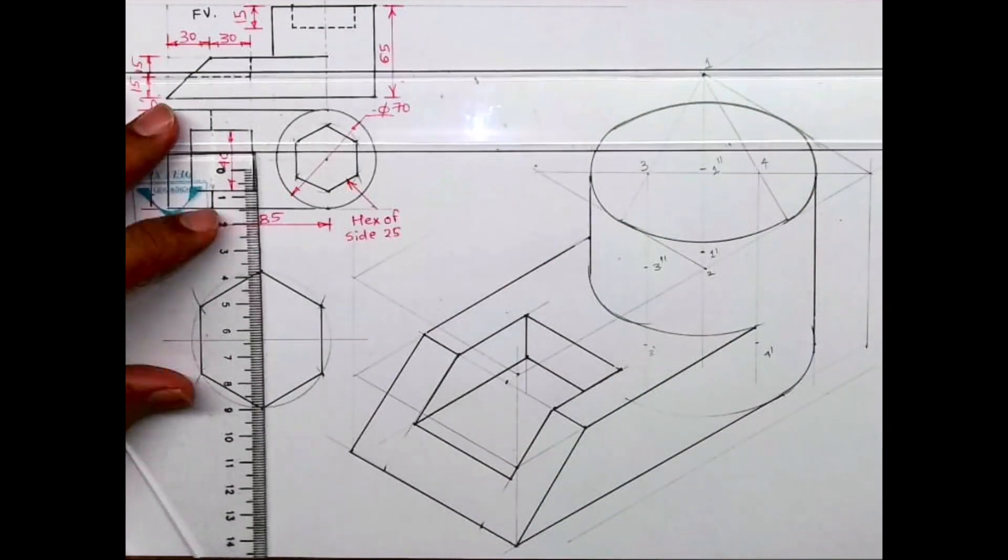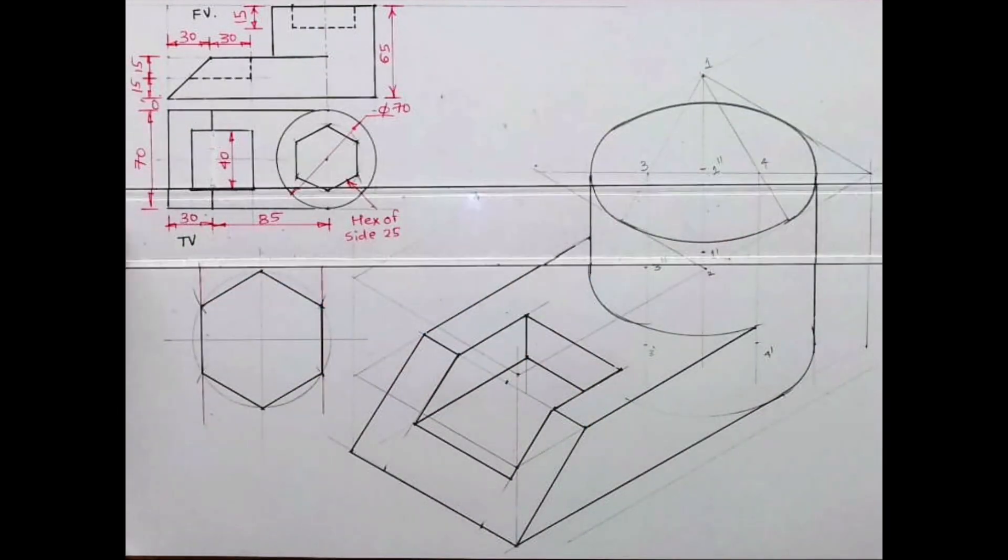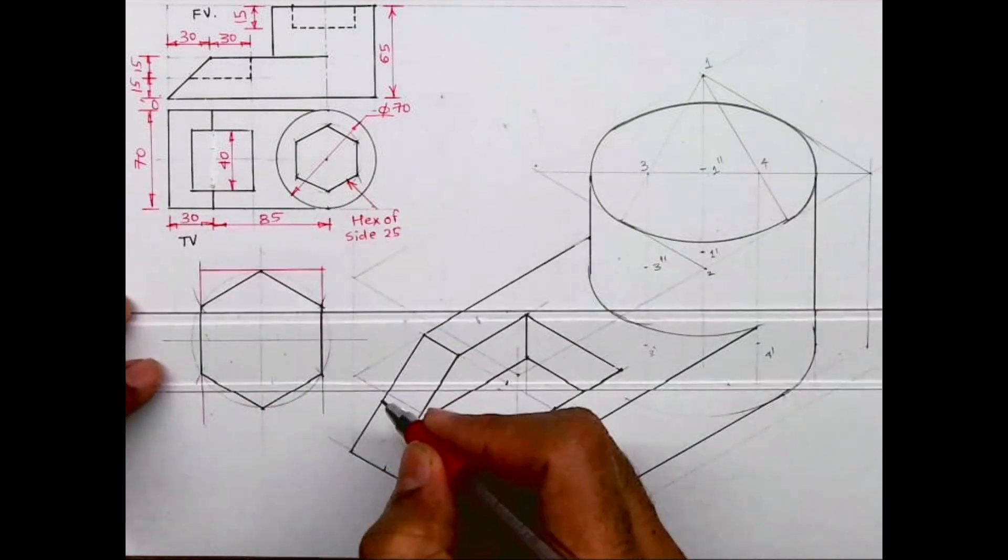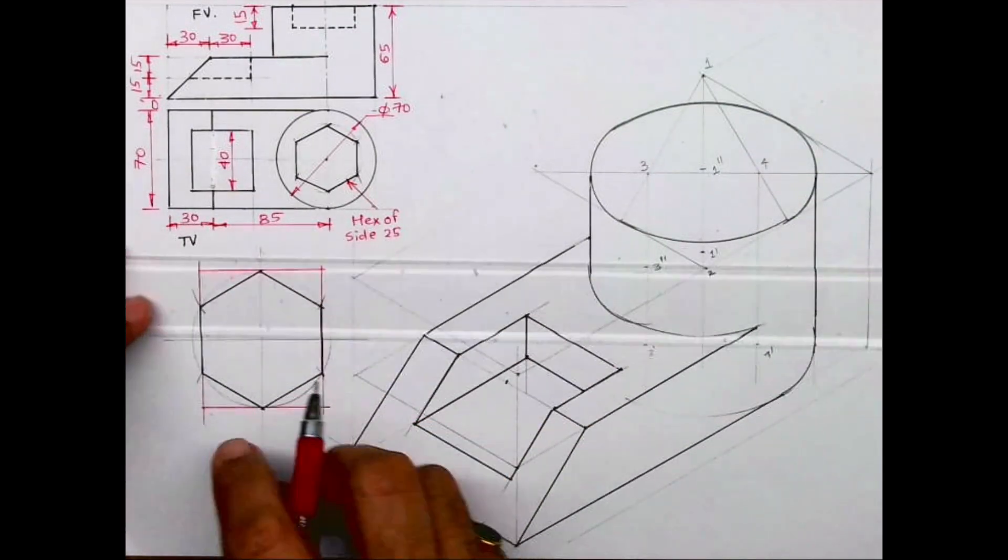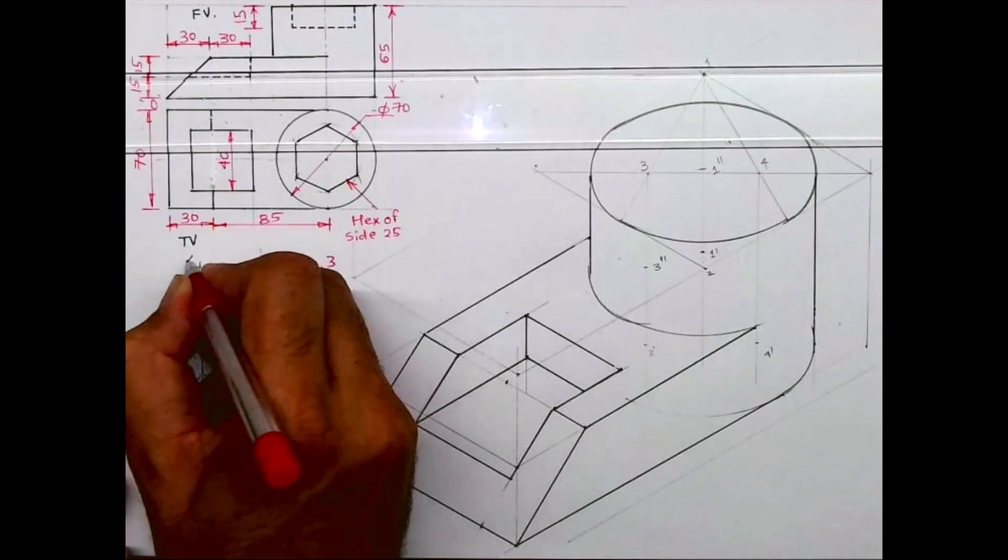So once you've got this hexagon, you convert this into a rectangle. So once you've got this hexagon, you convert this into a rectangle.